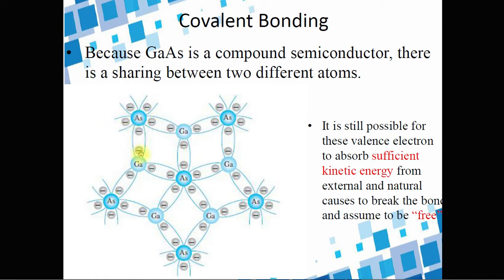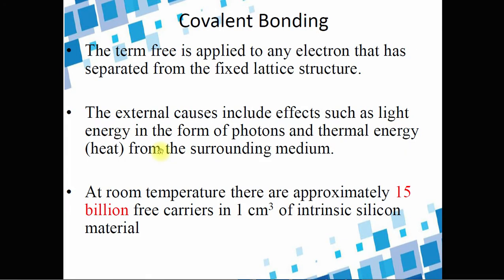In gallium arsenide, arsenic has five valence electrons and one is shared with a gallium valence electron. It is possible for valence electrons to absorb sufficient kinetic energy to break from their covalent bond and become free electrons. When this happens, a vacancy — called a hole — is left where the electron was removed. The term 'free' is applied to any electron that has separated from the fixed lattice structure. External causes may include light energy or thermal energy from the surrounding medium.